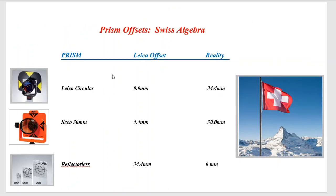This can be confusing — Leica, we'll say this is Swiss algebra here. Leica originally came out with older instruments and had a Leica circular prism. In the older variations, you'd see a prism offset of 0.0, but in reality they fixed that for the Leica circular prism. The absolute value of that prism was negative 34.4. So if we shot reflectorless or to a target, the actual absolute value would be 0, but inside Captivate the Leica constant would show as 34.4.